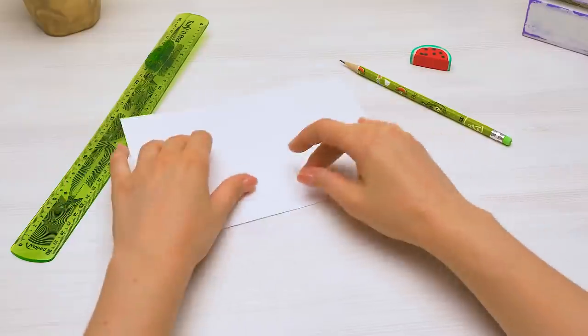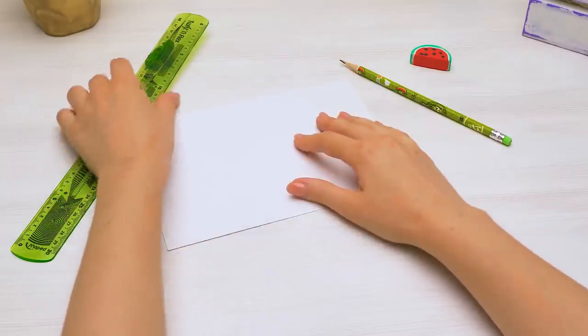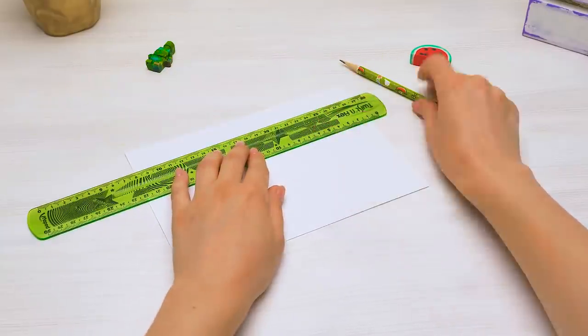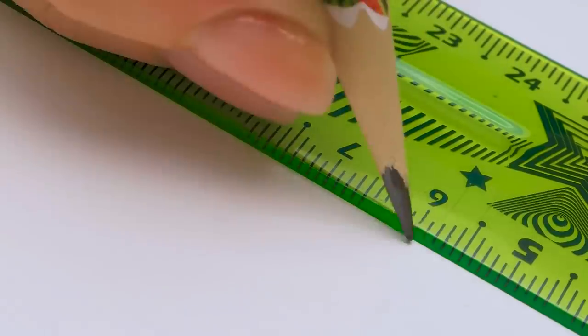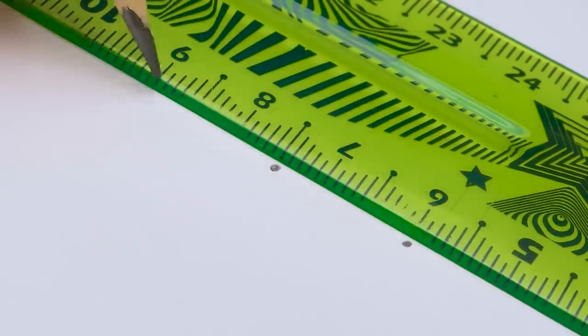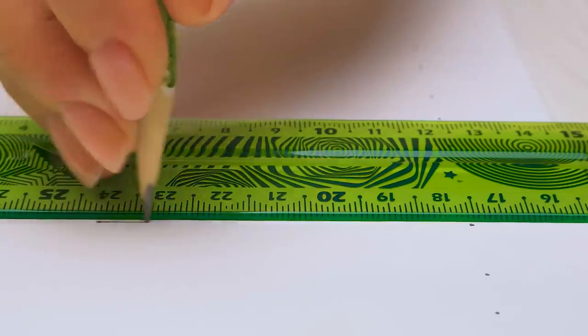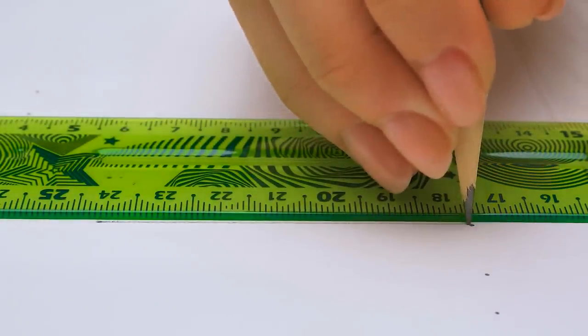If the last technique seemed too simple for you, let's try making something more complicated. We'll need a ruler and precise calculations again. I think it's better to draw dots first and then add the lines. Everything should be neat and symmetrical.